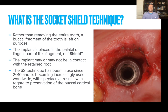Rather than removing the entire tooth, a buccal fragment of the tooth is left in place on purpose. The implant is placed in the palatal or lingual aspect of this fragment — what we call the shield. This implant can be in contact or not in contact with the retained root, but it's very important that you don't have any root mobility. This technique dates back to 2010.